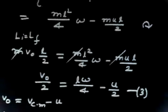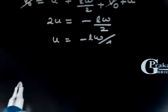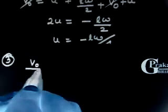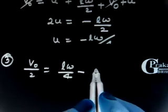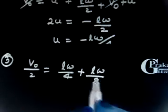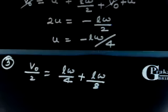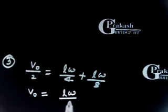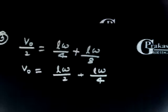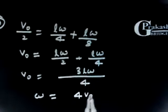Solving equation 3 with the substitution, we get V0/2 expressed in terms of L and omega terms. Taking L*omega common and solving: omega equals 4*V0/(3*L).